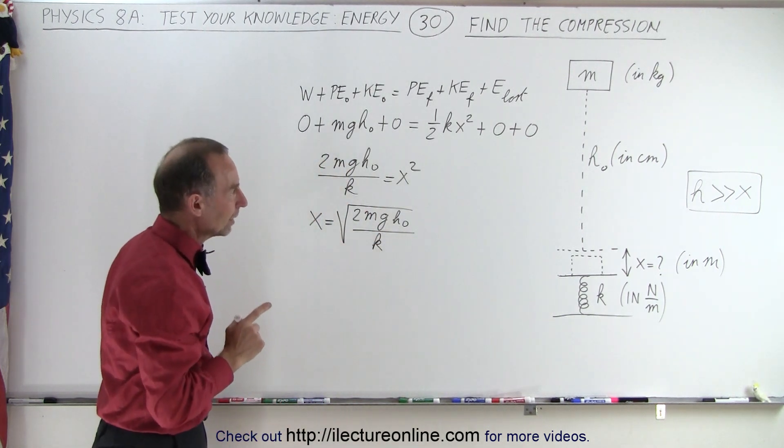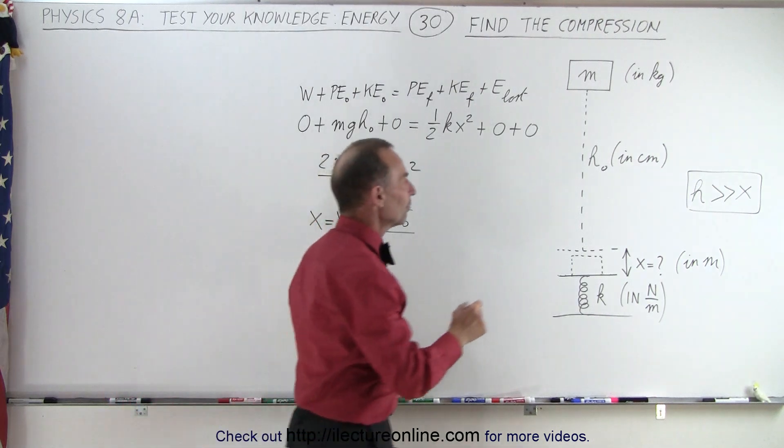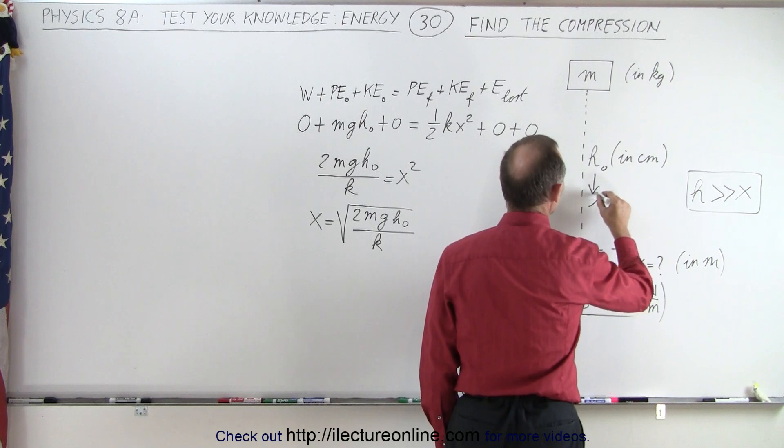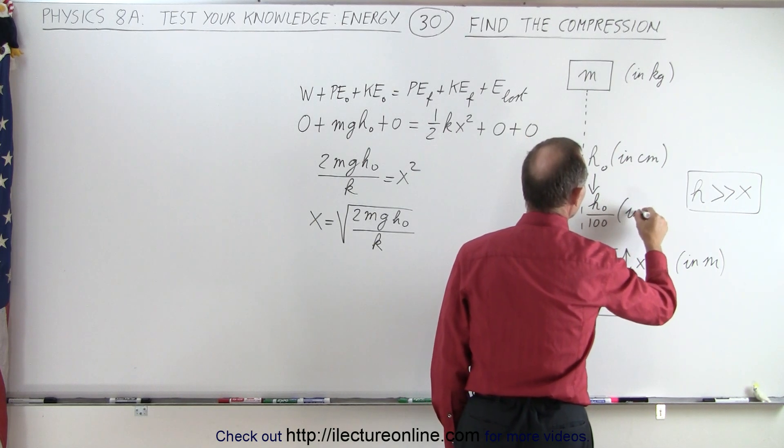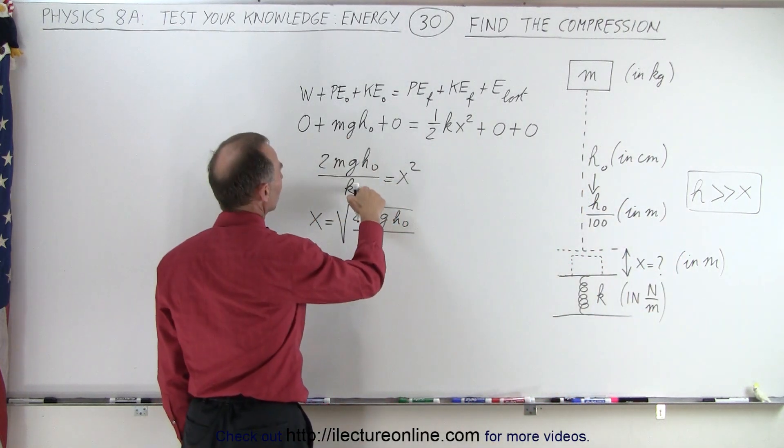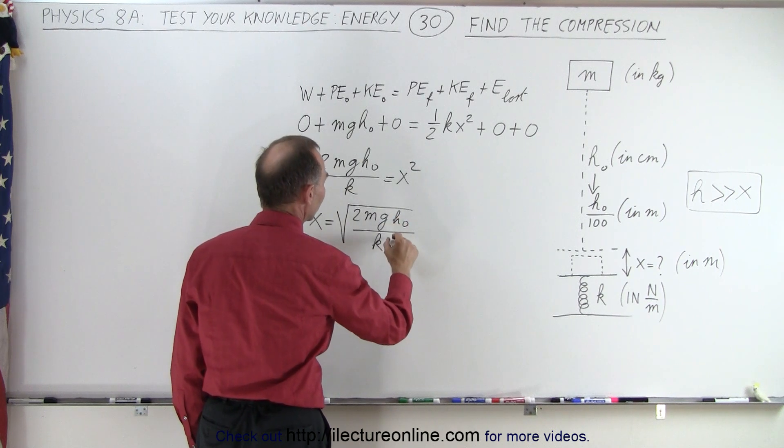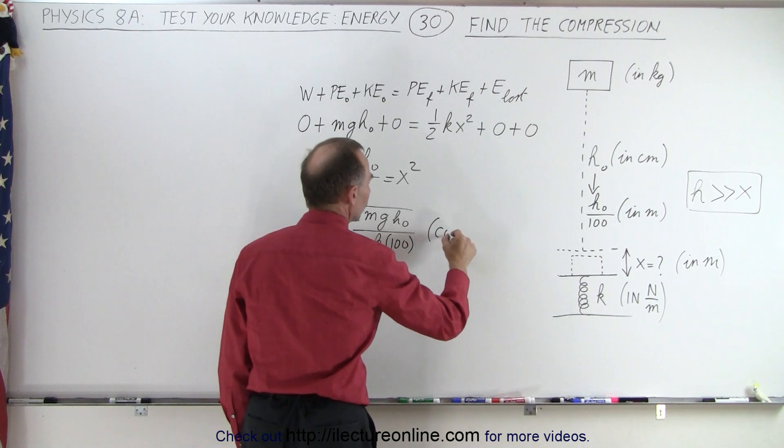be careful, one thing, h is in centimeters, so what we need to do is convert h into meters. So that would be equal to h sub-naught divided by 100 in meters. So essentially, what we need to do here is we need to take that into account. So this would be h sub-naught divided by 100 to convert to meters.